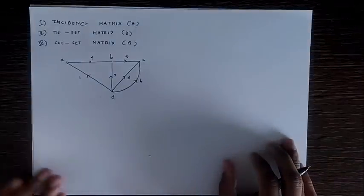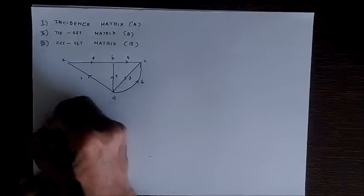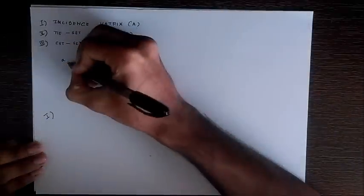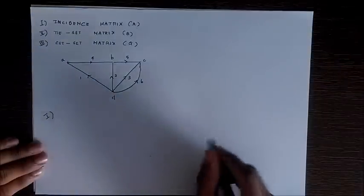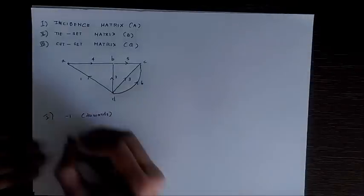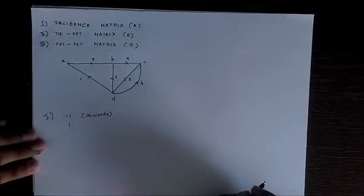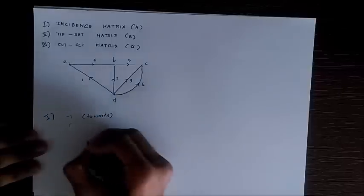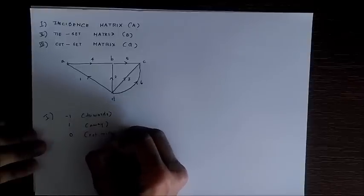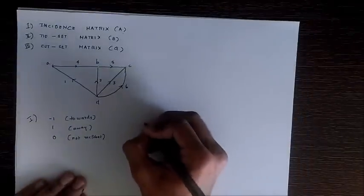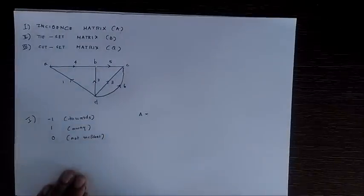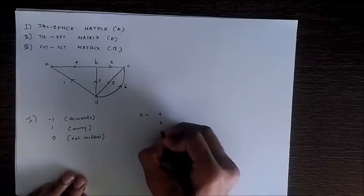Branches 5 and 6 are assigned arbitrary directions. Let's first write the incidence matrix A. For writing the incidence matrix, remember: if a branch is incident on a node and directed towards it, we give negative one. If the branch is incident on the node and directed away from it, we give positive one. We give zero if it is not at all incident on that node.